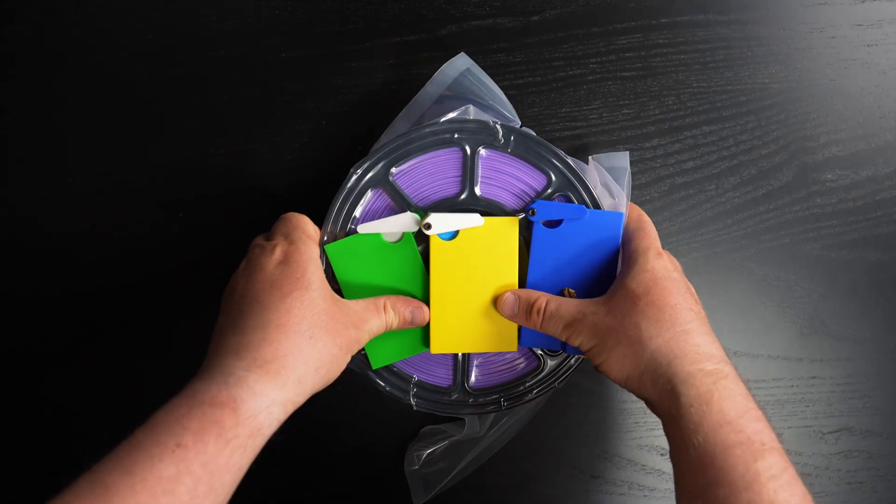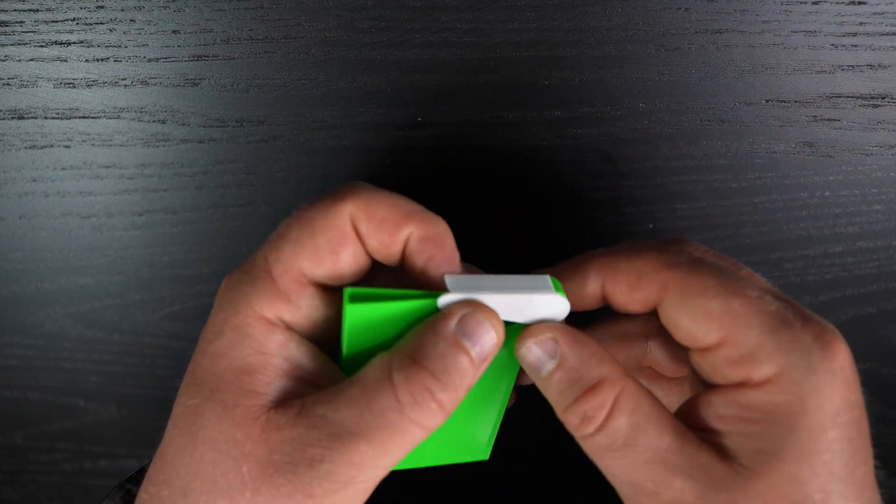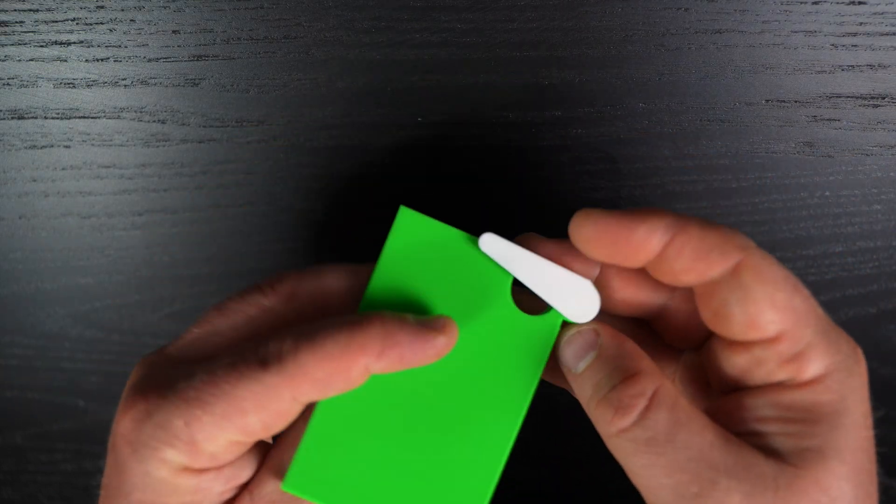How to make it? Easy peasy. There are three wallet versions. The first one is the simplest. Printed ideally with TPU filament, plug the cover into the slot and use it.